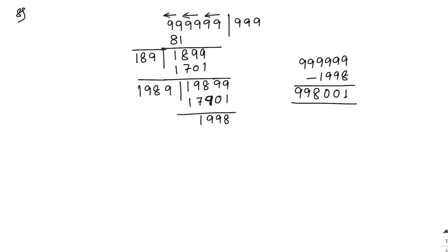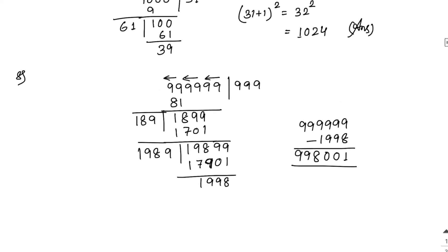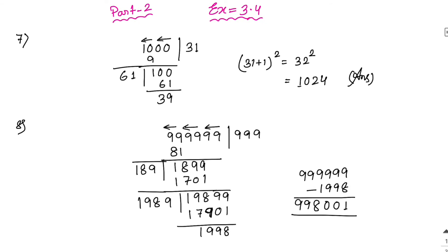So the greatest 6-digit perfect square number is 998001. To summarize: for the smallest number, add 1 to the quotient and find the square of that number. To find the greatest number, just subtract the remainder from the given number.